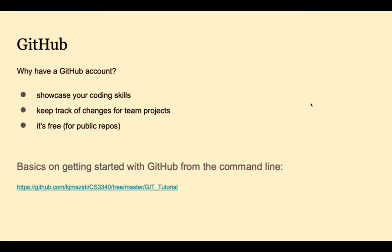You can even do bulleted lists and sample code with backticks. Speaking of GitHub, I think everyone should have a GitHub account. It gives you a place to showcase your coding projects, and if you're working on projects with teams, it's a great help — and it's free for public repositories. I have some basics on getting started with GitHub from the command line, but you don't have to use the command line. This is a great place for potential employers to find you and see what kinds of projects you can do. But don't put your homework out there — only original projects.